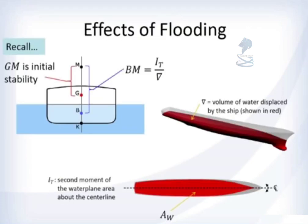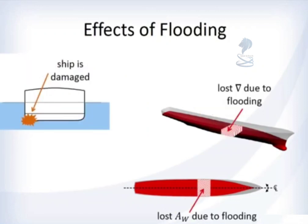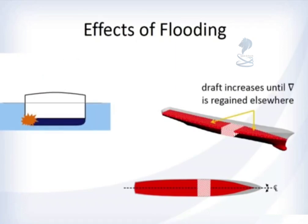So your ship has become damaged and it's going to flood. What are the effects of that flooding? GM is our measure of initial stability, and to get GM you calculate BM. BM is calculated by the second moment of the waterplane area about the centerline divided by the underwater volume of the ship. When the ship is damaged, you lose some of the original underwater volume due to flooding — that's lost buoyancy. You also lose some waterplane area. The ship will sink, meaning draft increases until the lost underwater volume is regained elsewhere, giving a higher draft but still missing buoyancy in the damaged section.